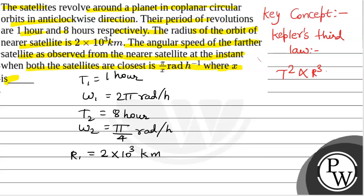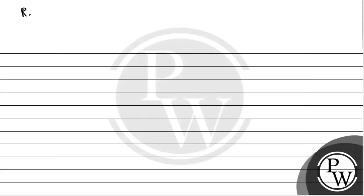Applying Kepler's Third Law: T squared is directly proportional to R cubed, so r2 by r1 all cubed equals t2 by t1 squared. So r2 by r1 equals 8 by 1 to the power 2 by 3, giving r2 equal to 8 into 10 to the power 3 km.